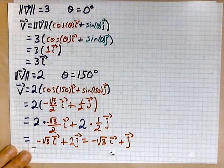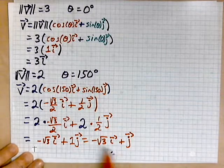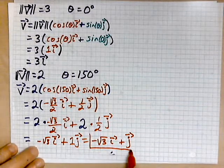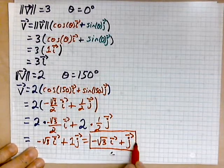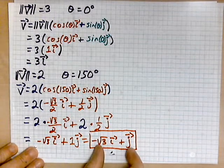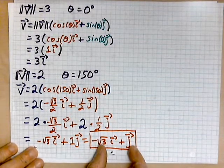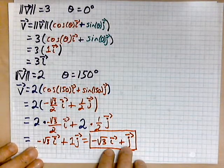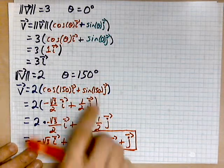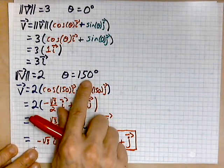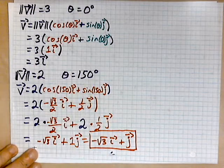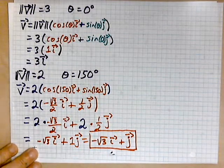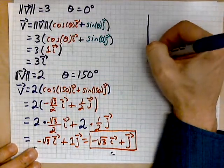There we are, step by step. So, this vector here is the vector whose length is 2 and makes an angle of 150 degrees relative to the positive x-axis. So, if we were to draw a little coordinate system, we could illustrate.